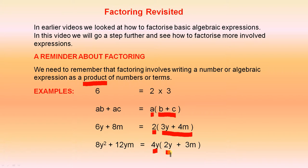8y² plus 12ym is the product of 4y and 2y plus 3m. If we multiply those together it will give us these terms here. So that's what we mean by factoring.